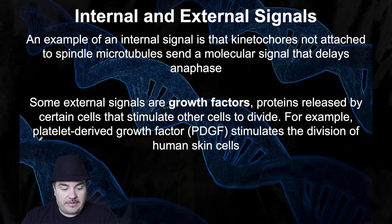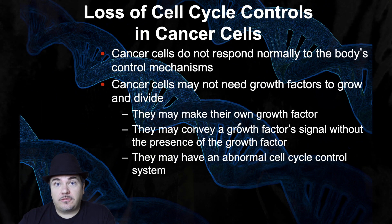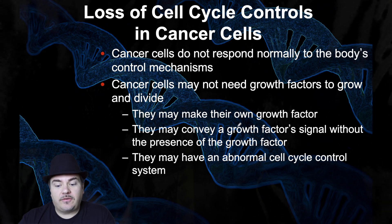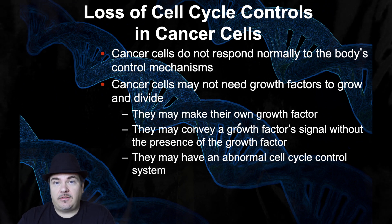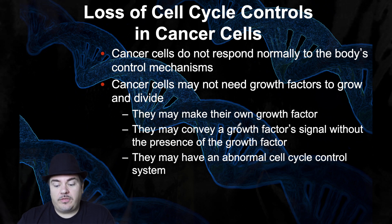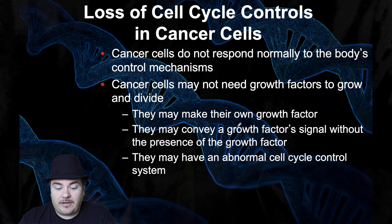Cancer cells do not respond normally to the body's control mechanisms and may not need growth factors to grow and divide. One reason is they might make their own growth factor, telling themselves to divide even when they shouldn't. Or they might convey a growth factor signal without the presence of a growth factor — thinking they're being told to divide even when they're not.